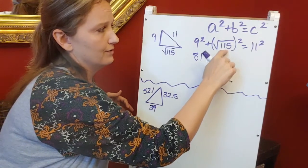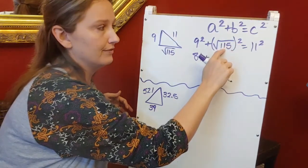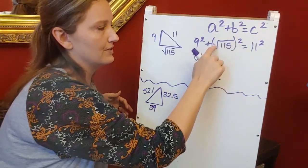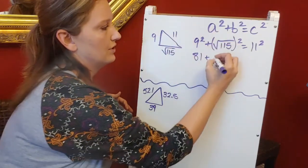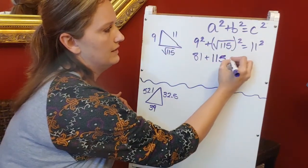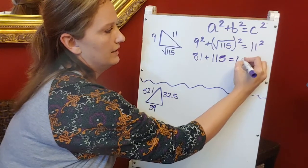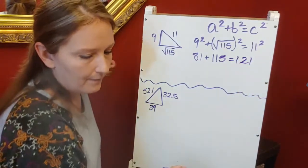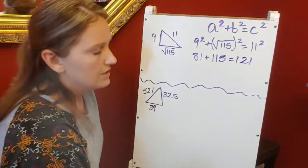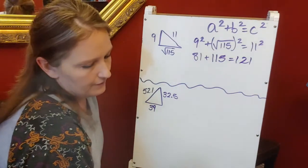If you type √115 squared in your calculator, it's just 115 because the square root and squared cancel each other out. 11² is 121. If I add 81 + 115, I get 196 = 121. I know 196 is not equal to 121, but what I need to